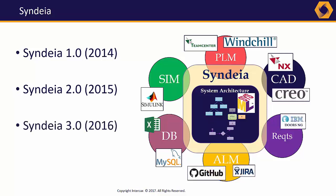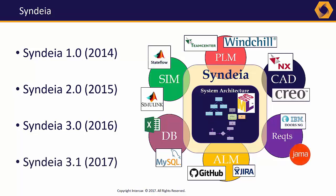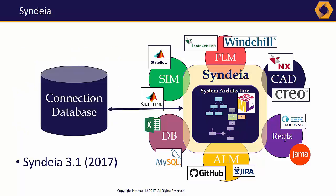Cyndia 3.0 in the summer of 2016 added requirements in DOORS NG, software ALM with GitHub, and project management with Jira. The latest release, Cyndia 3.1 in May 2017, has new interfaces to JAMA and StateFlow. Equally important, Cyndia 3.1 has a separate backend database for building, maintaining, and querying the graph connections.